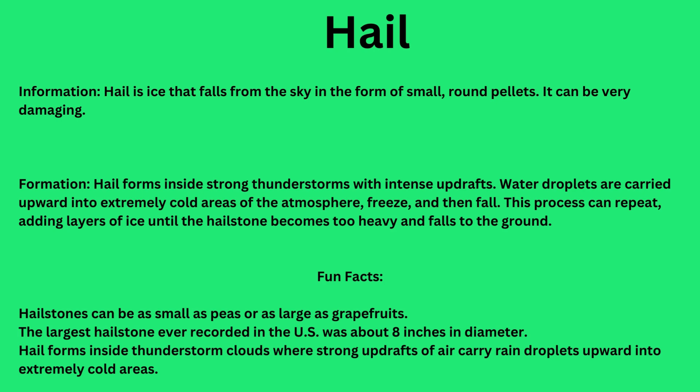Fun facts about hail: Hailstones can be as small as peas or as large as grapefruits. The largest hailstone ever recorded in the U.S. was about eight inches in diameter. Hail forms inside thunderstorm clouds where strong updrafts of air carry rain droplets upward into extremely cold areas.